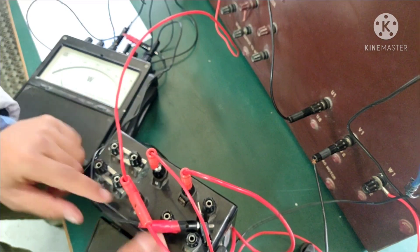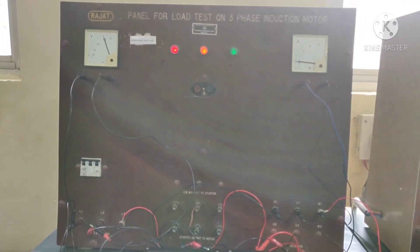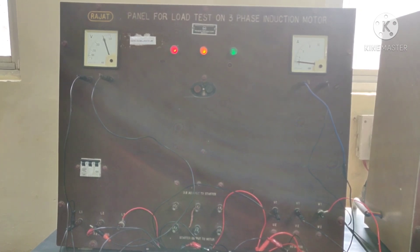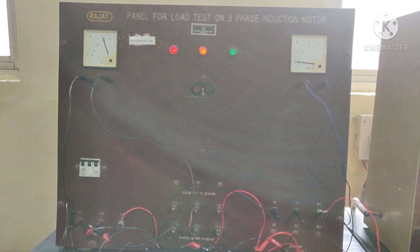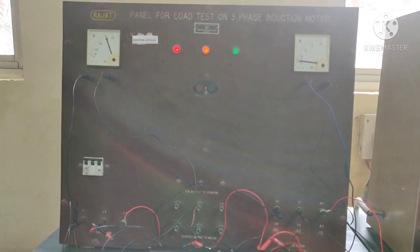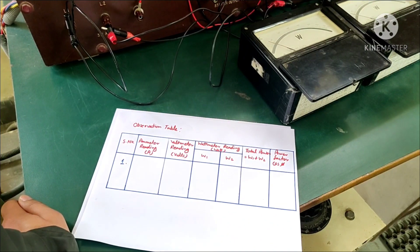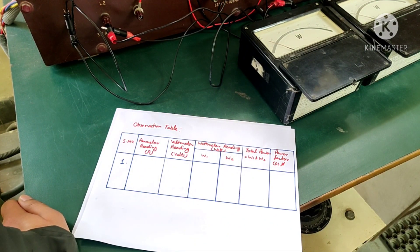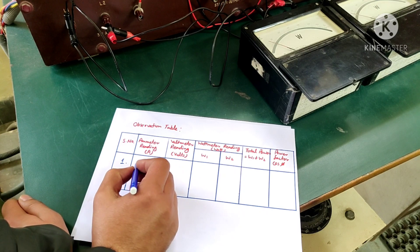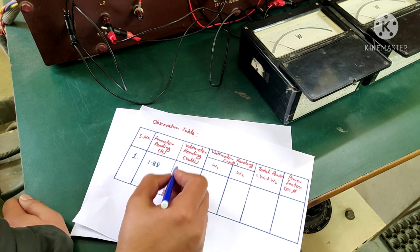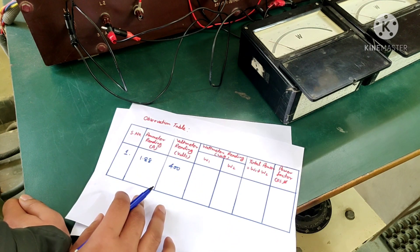So before taking the reading of the wattmeter, let us check out the voltage and current. So we have provided this panel, or you can say the induction motor, a voltage of 400 volts approximately, and the current drawn comes out to be 1.88. Accordingly, let us now fill our first two columns of the observation table. Ammeter reading is 1.88 and voltmeter reading is 400 volts.